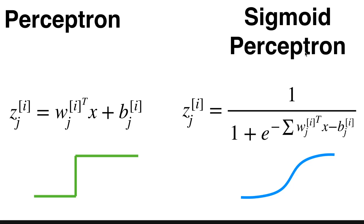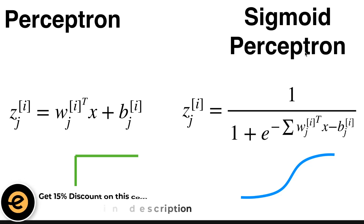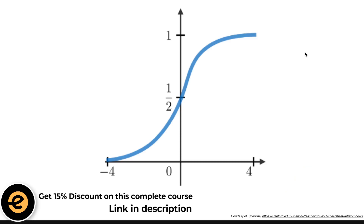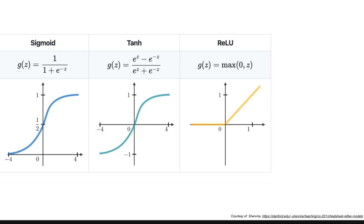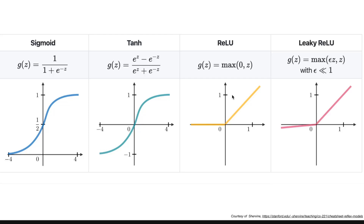Are these two the only activation functions available? Absolutely not — we have many more. Beyond sigmoid, we have other shapes, and notably ReLU, which is very different. ReLU is super easy and super fast to compute on GPUs. Bear in mind that ReLU is our reference choice when training deep learning networks, and there are also other variants of ReLU.